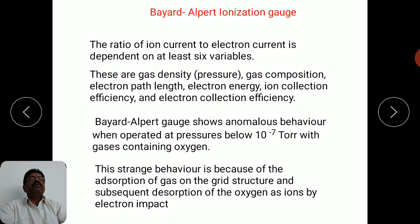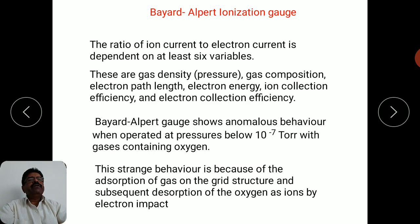This is what a typical Bayard-Alpert ionization gauge involves. In this way, we have completed the study of different types of ionization gauges — at least five different types. All these ionization gauges have certain merits and demerits and different ranges of pressure measurement, so they can be used according to the needs of your system for measurement of vacuum.